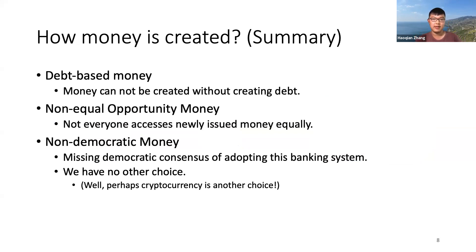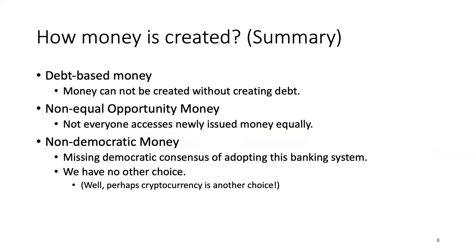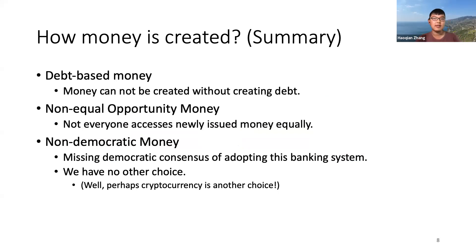Second, it is non-equal-opportunity money. Bob in our example is lucky because he has a credit card and can apply for a mortgage, but not everyone is as lucky as Bob. Finally, this is non-democratic money, since we are missing the democratic consensus of adopting this banking system in the first place — partially because we do not have any other choice.